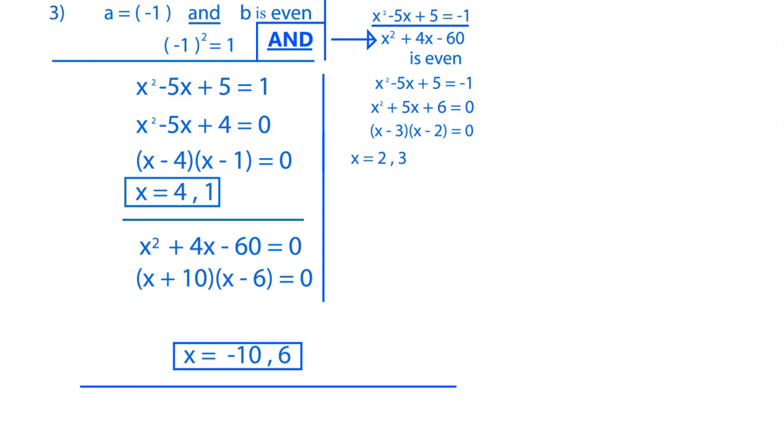So let's start with x equals 2 and see if this is even or not. So if x is 2, we have 2 squared plus 4 times 2 minus 60. And this is 4 plus 8 minus 60, which is 12 minus 60, which is minus 48.